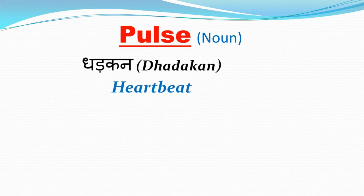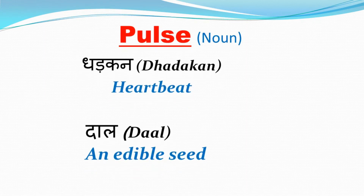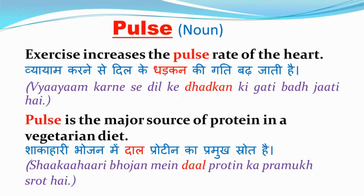Pulse के दो अर्थ होते हैं. Pulse means धड़कन, heartbeat. Let's understand by these sentences. Exercise increases the pulse rate of the heart. प्यायाम करने से दिल के धड़कन की गती बढ़ जाती है.